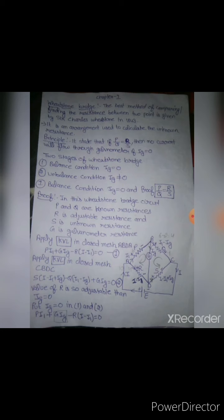Now comes its principle, which states that if P/Q equals R/S, then no current will flow through the galvanometer if I_g equals zero.